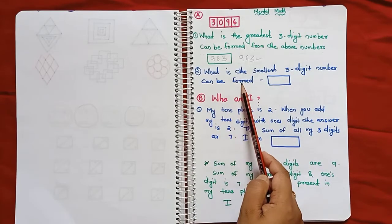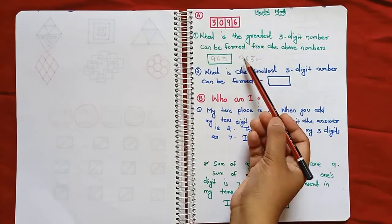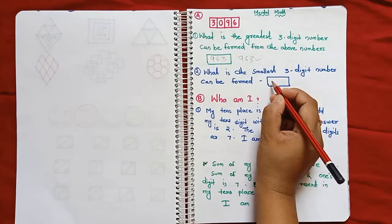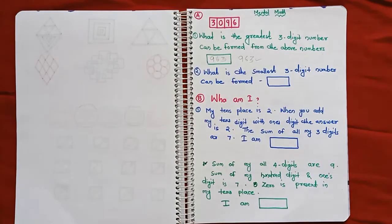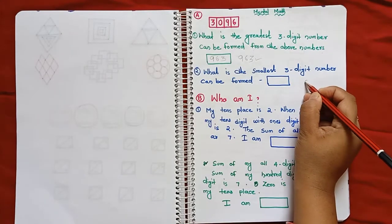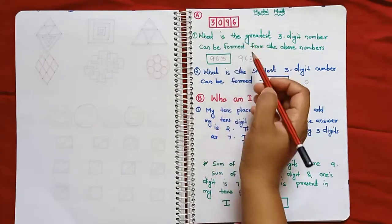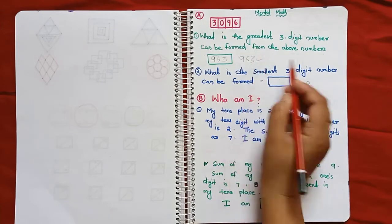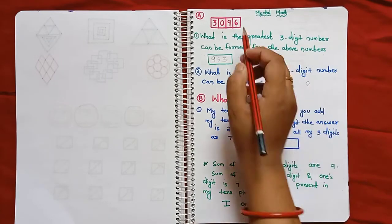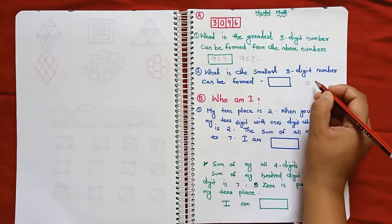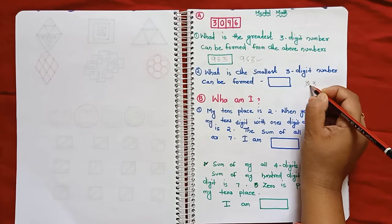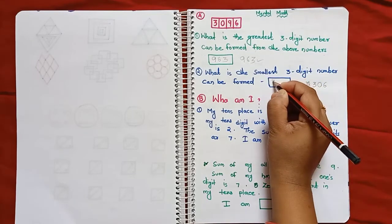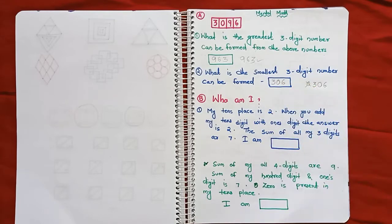The second question: What is the smallest 3-digit number that can be formed? If you have the greatest, you can reverse it — but here there is a 0, which we have to be careful about. The smallest digit that can come first is 3, then 0, then 6. So the answer is 306.